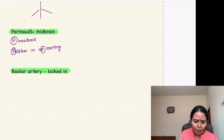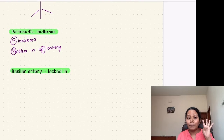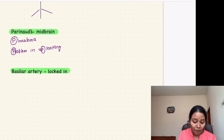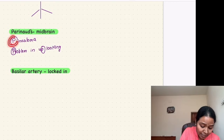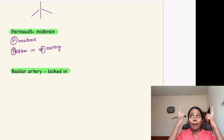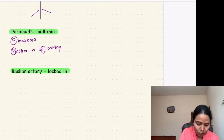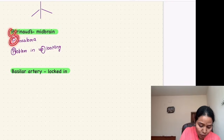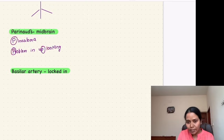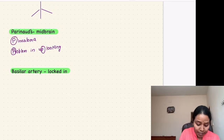The third midbrain syndrome is Parinaud's syndrome. Remember there are four P's: it is seen in pinealoma, and the problem is in up-looking. So the four P's in Parinaud's syndrome are key findings to look for in your MCQs.